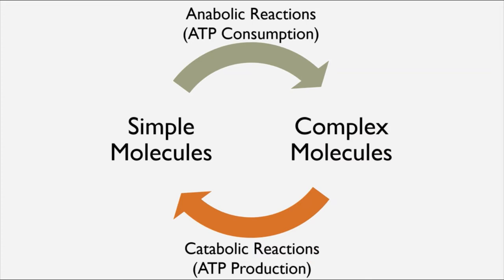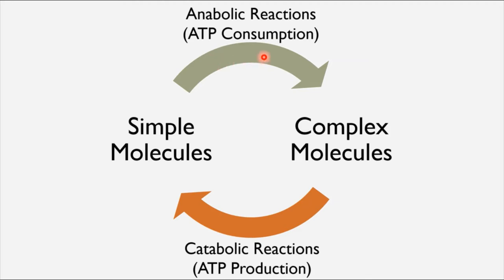The other thing we want to introduce at this point is ATP. We know that catabolic reactions are associated with energy being released, and energy is pretty much synonymous with ATP production. The way that energy is released from catabolic reactions is that this high-energy molecule called ATP is generated. On the other hand, the way that simple molecules are built back up is that the ATP the cell has generated is then consumed in anabolic reactions to make larger molecules from small ones. So ATP is synonymous with energy for the cell—it is the cell's energy currency.